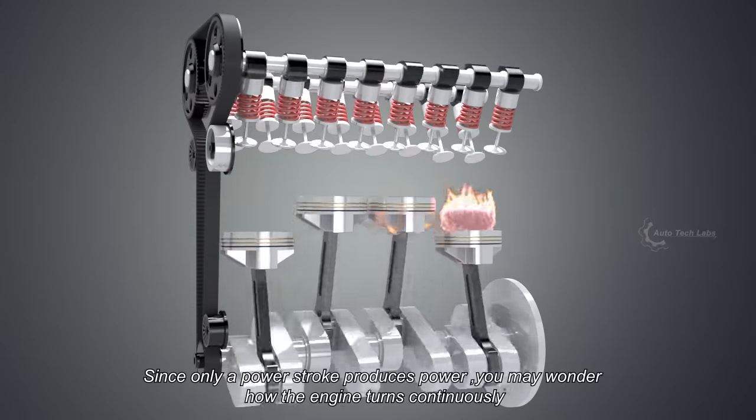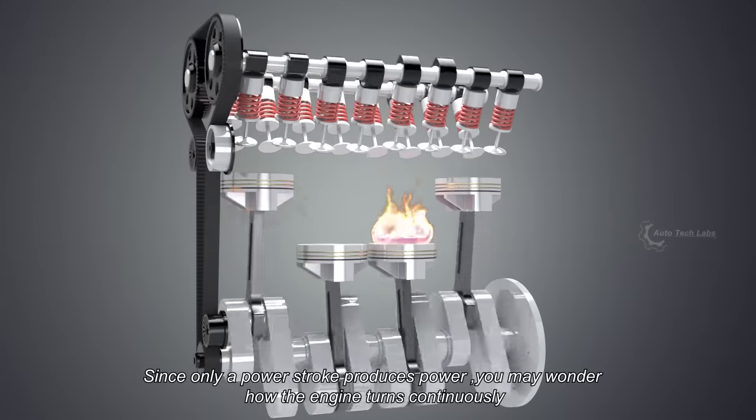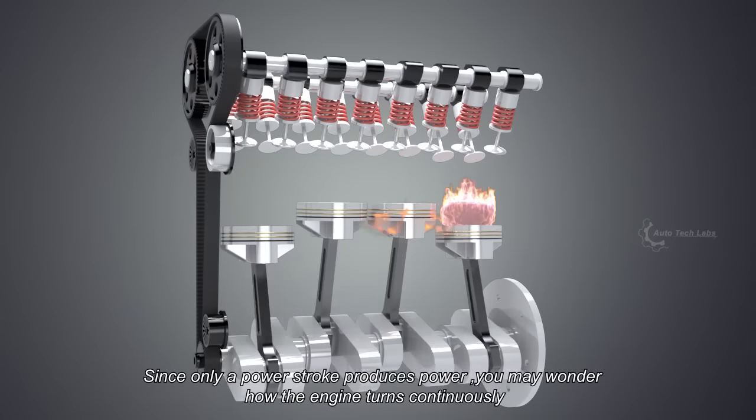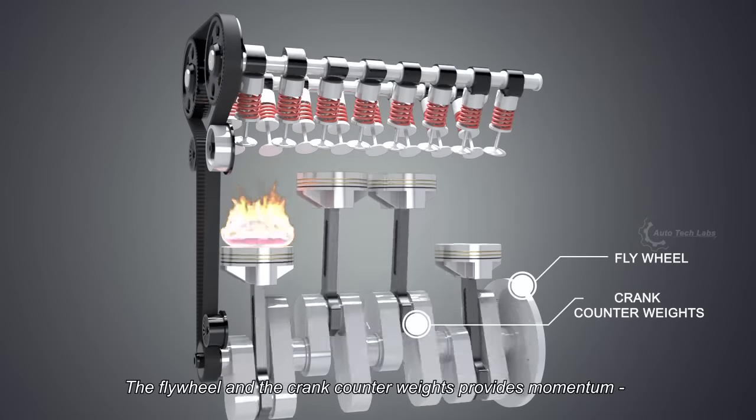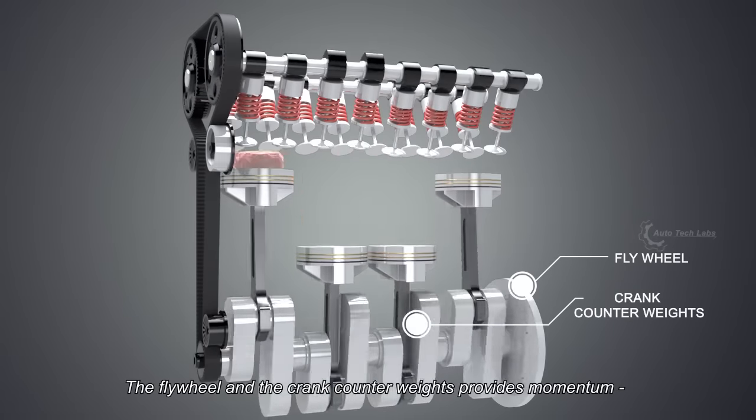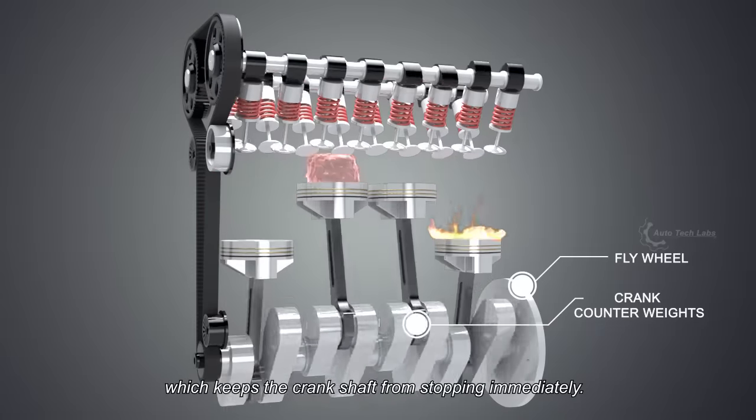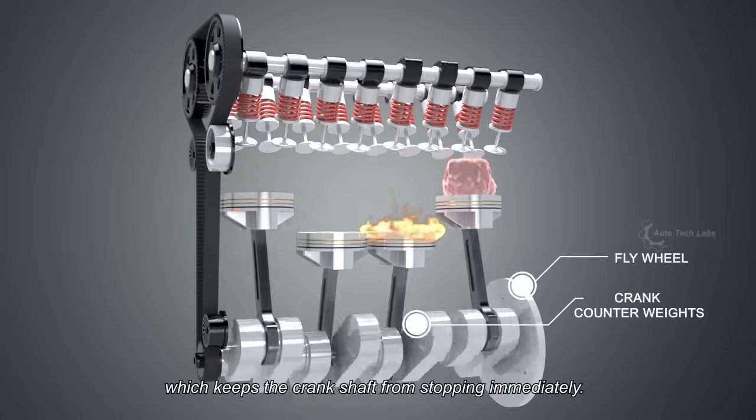Since only a power stroke produces power, you may wonder how the engine turns continuously. Well, the answer is in the crank itself. The flywheel and the crank counterweights provide momentum which keeps the crankshaft from stopping immediately.